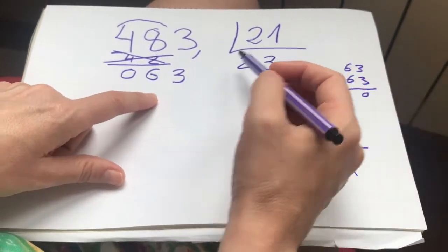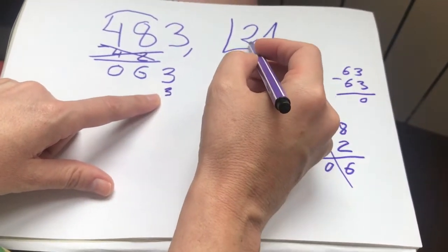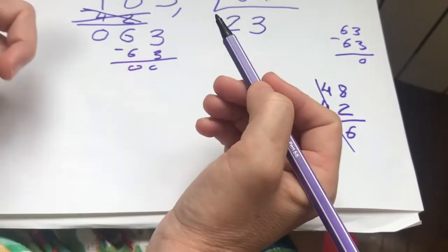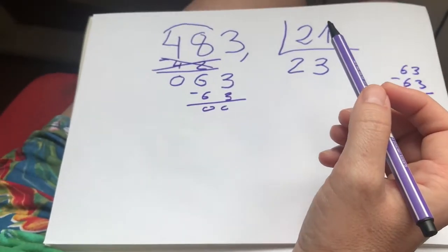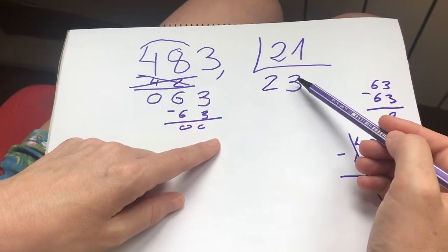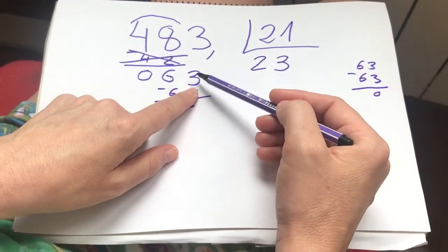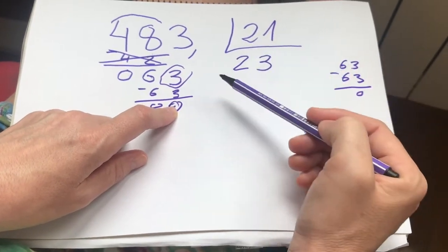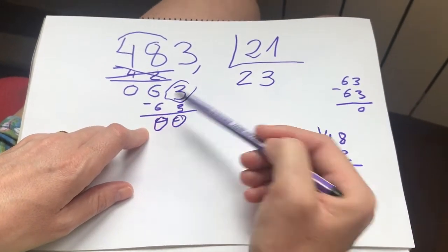Puedo hacerlo aquí. 3 por 1, 3. 3 por 2, 6. Y lo resto aquí. Y me daría 0. O puedo hacerlo directamente con los dedos. 3 por 1, 3. Hasta el 3 que tengo que ir, 0. 3 por 2, 6. Hasta el 6 que tengo que ir, 0.